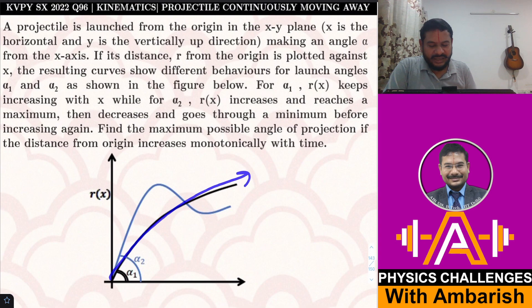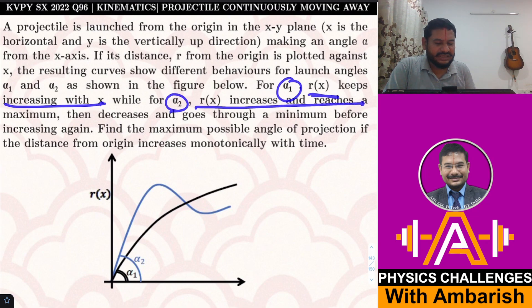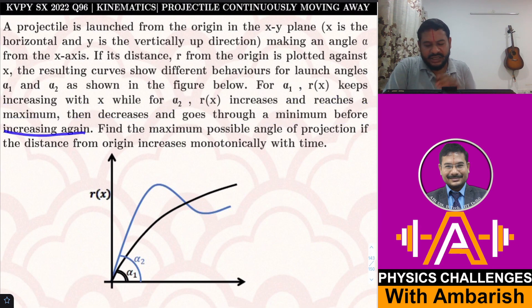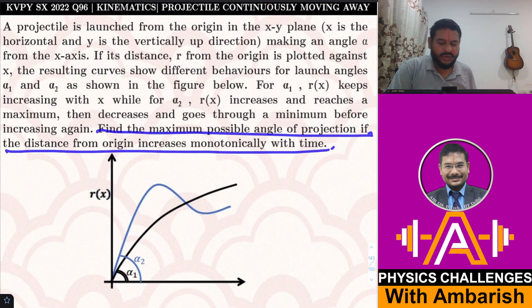For α₁, r(x) keeps on increasing with x, while for α₂, r(x) increases, reaches a maximum, then decreases and goes through a minimum before increasing again. Find the maximum possible angle of projection if the distance from the origin increases monotonically with time.